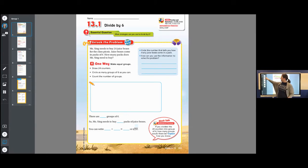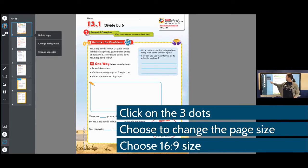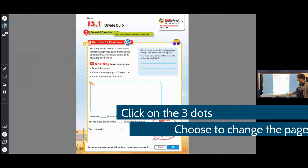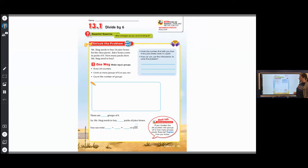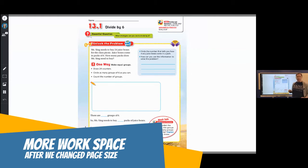On each section, on each one, there's three dots. When I choose the three dots, I want to choose Change Page Size to 16 by 9, the option in the middle. When I do this down at the bottom, I'm going to select OK, and now you can see it's changed to white space on either side of my module.